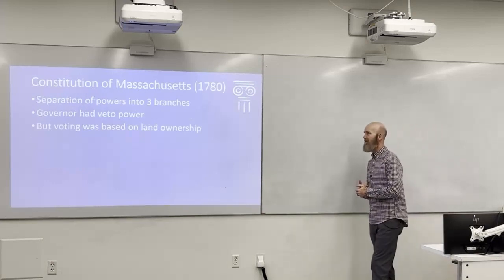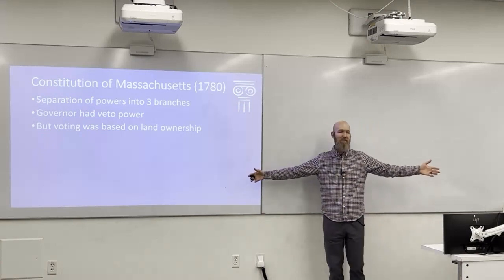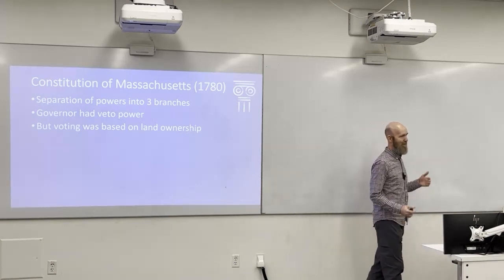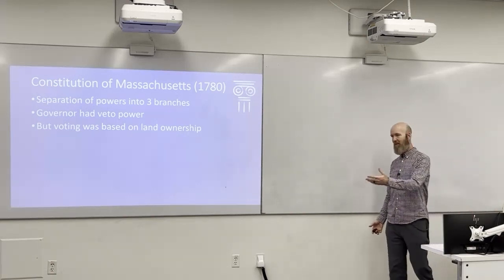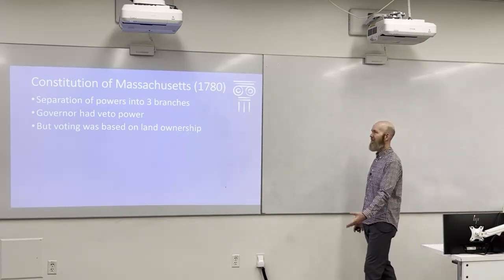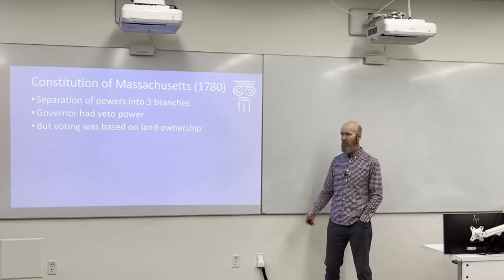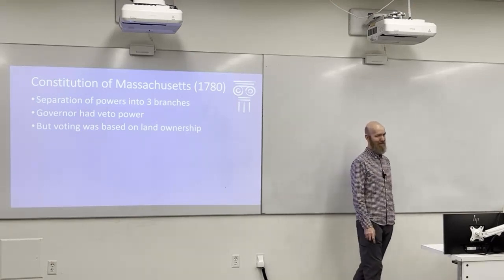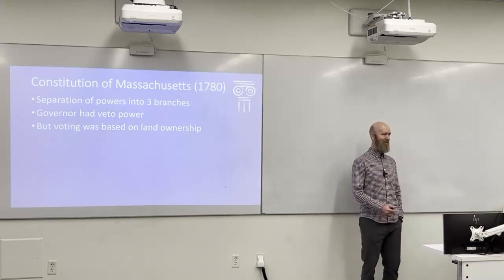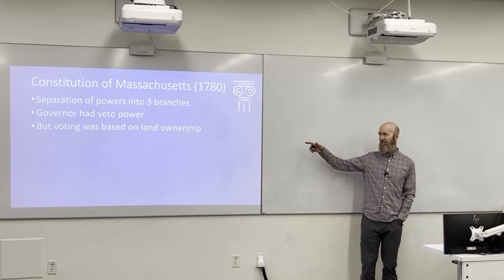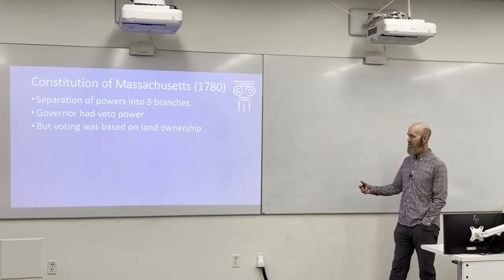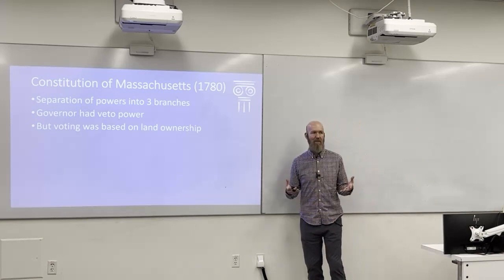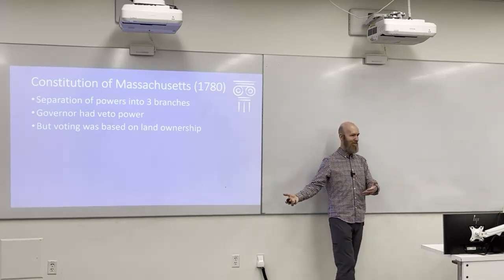Another document they say you need to know for the test is the Constitution of Massachusetts from 1780, which comes after the American Revolution but before the U.S. Constitution. It's important because it begins to develop ideas that would become part of the U.S. Constitution. Between the American Revolution and the U.S. Constitution there was the Articles of Confederation. The Constitution of Massachusetts established three fairly equal branches of government, just like our modern U.S. Constitution.